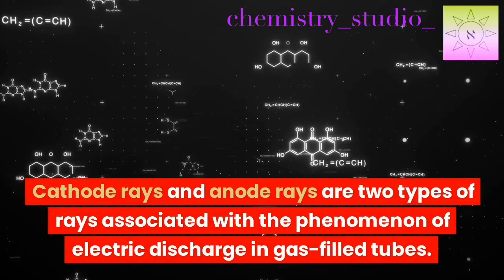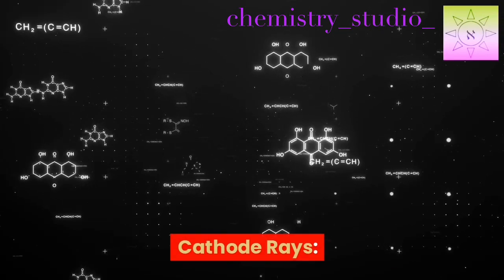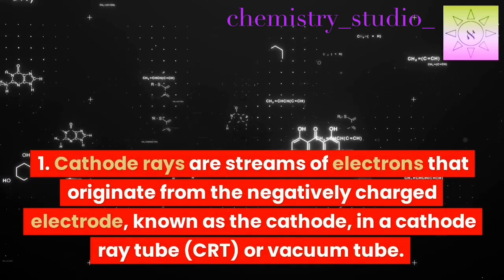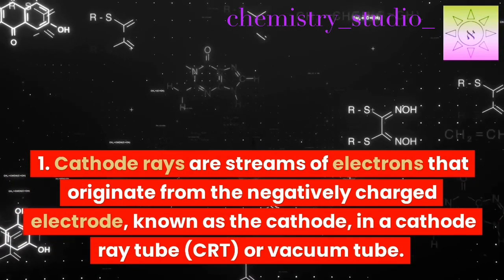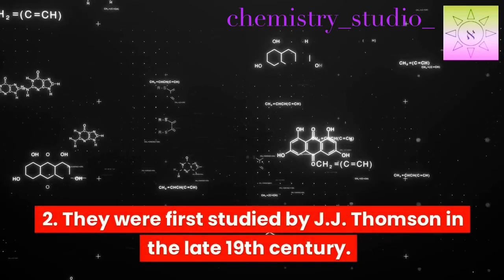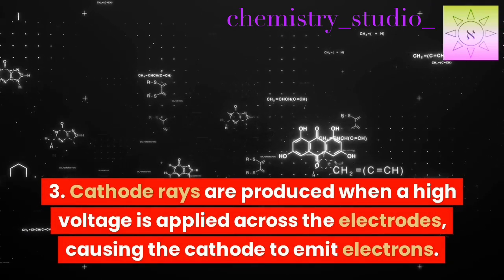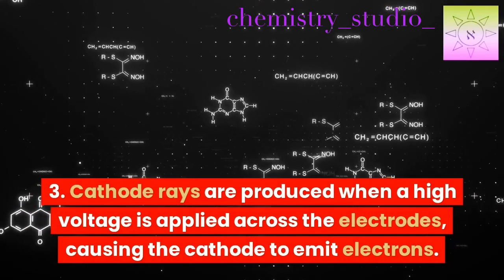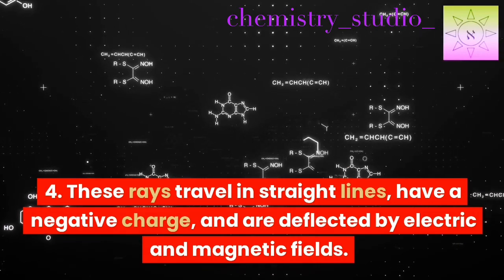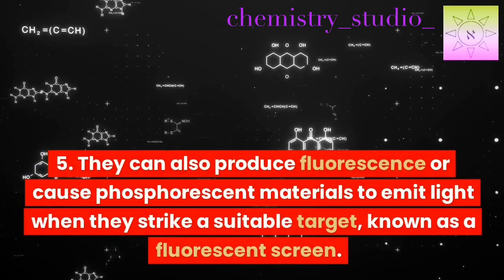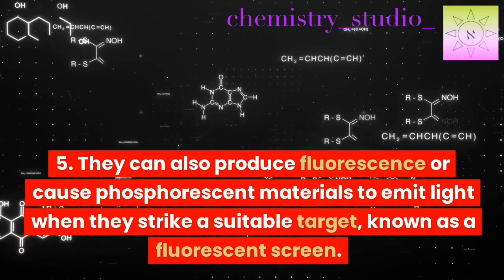Cathode rays are streams of electrons that originate from the negatively charged electrode (cathode) in a cathode ray tube (CRT) or vacuum tube. First studied by J.J. Thomson in the late 19th century, they are produced when a high voltage is applied across electrodes, causing the cathode to emit electrons. These rays travel in straight lines, have a negative charge, and are deflected by electric and magnetic fields. They can also produce fluorescence when they strike a phosphorescent screen.